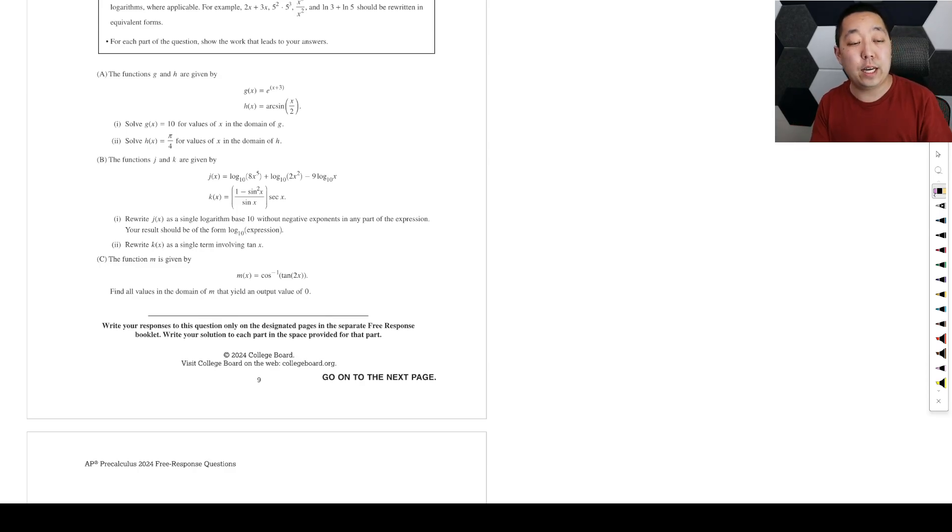FRQ number four for the AP Pre-Calculus 2024 exam. If there are any corrections or clarifications, I will put it as a pinned comment down there. So functions g and h are given by this function. Solve g of x equals 10 for values x in the domain.